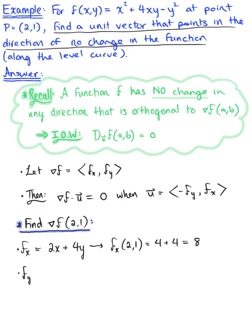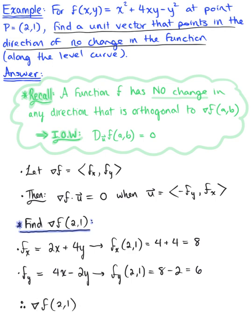The partial derivative of the function with respect to y is 4x − 2y. Evaluating at (2, 1): 4 times 2 is 8, minus 2 times 1 is 2, which leaves us with 6. Therefore, the gradient vector at (2, 1) is the vector with components ⟨8, 6⟩.